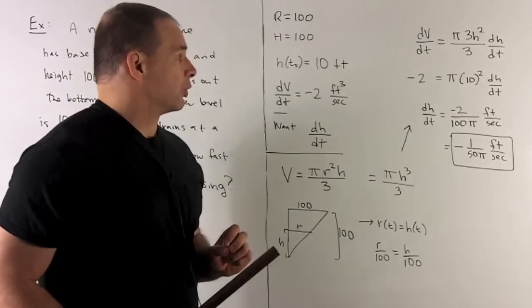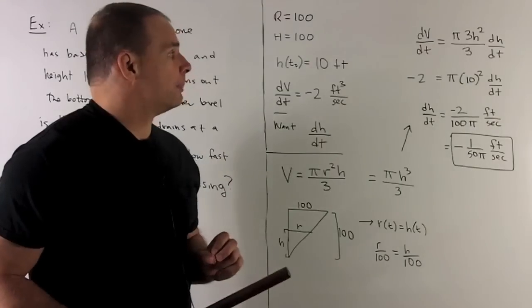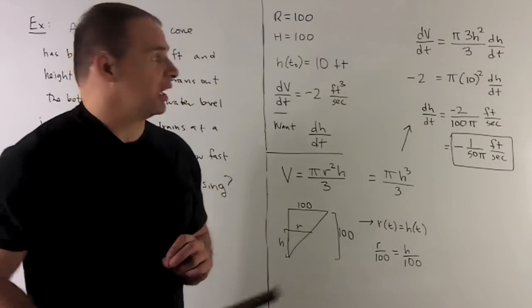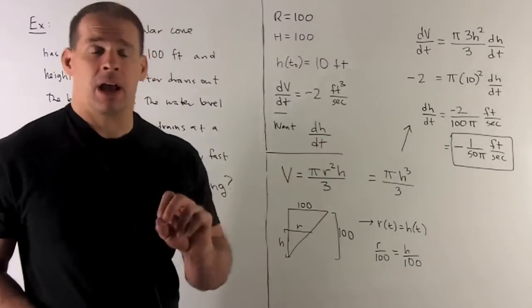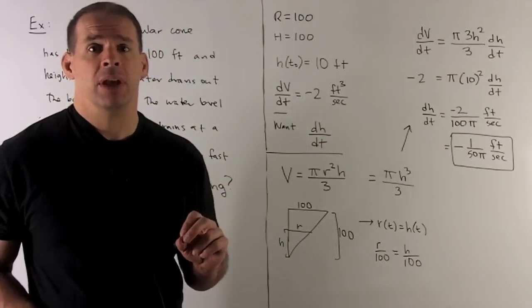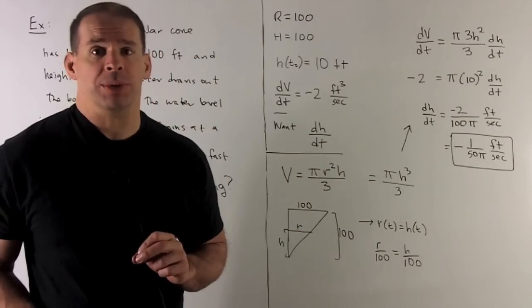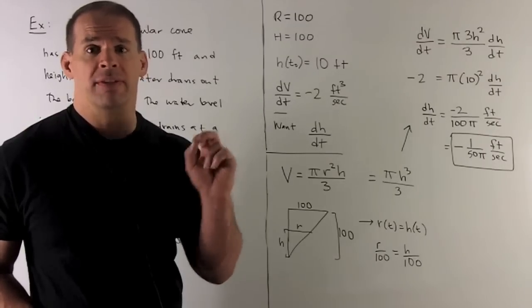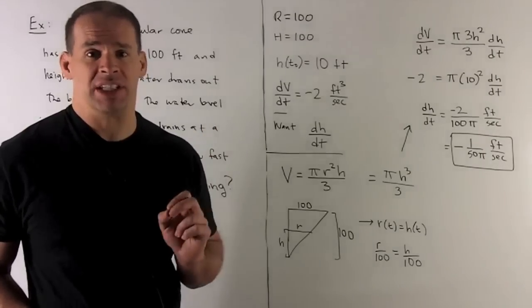So, I apply derivatives, and we're going to use our chain rule, so what will happen? On one side, we'll have dV/dt. On the other side, I'll pull out the π/3, going to take the derivative of H³. That's going to be 3H², and then on the end, we have to do a chain rule, so derivative of the inside is going to be dH/dt.